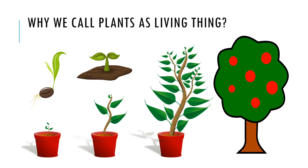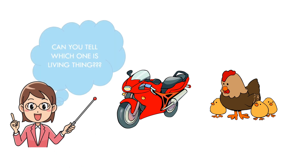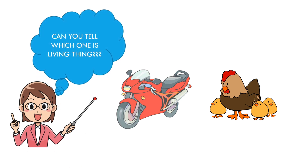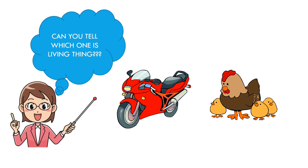You may have a doubt: why do we call plants and trees living things? Because they can breathe, they can grow, they can utilize nutrients, and reproduce. So they fall under living things.